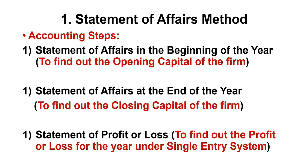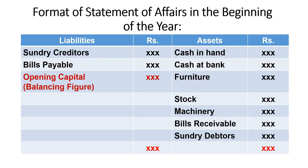The Statement of Affairs method has only three steps. Let's look at the format. The format of Statement of Affairs at the beginning of the year — assets and liabilities are totalled, and the balancing figure is the opening capital. The same format applies at the end of the year.